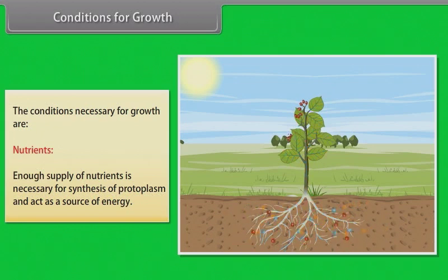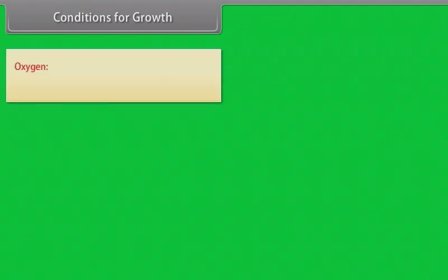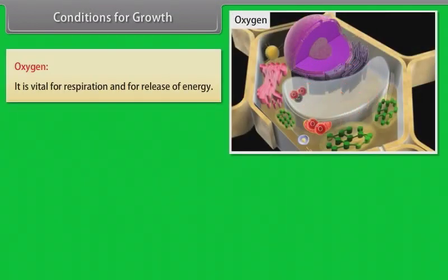Water. An adequate supply of water is essential for growth. It maintains cell turgidity which enhances growth. It also provides medium for enzymatic reactions. Oxygen. It is vital for respiration and for release of energy.